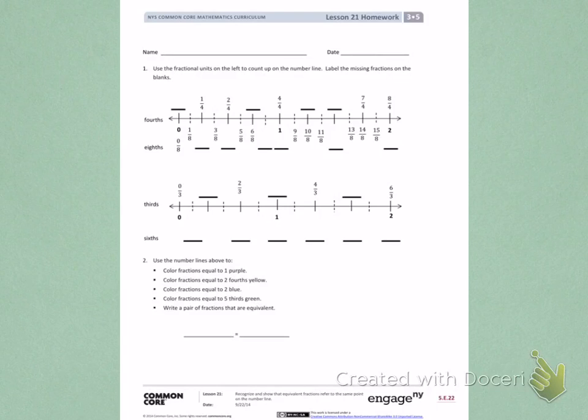The first number line I see is fourths. That's the top of the number line. And there's a fraction missing above the 0. That fraction is 0 fourths.